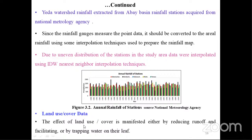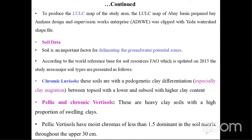Land use/land cover map data: the effect of land use/land cover is manifested by either reducing groundwater or facilitating water trapping at the surface. The land use/land cover map of the Amhara region, prepared by MRA Design and Supervision Work Enterprise, was clipped with the watershed boundary. Soil data is an important factor in delineating groundwater recharge zones. According to the FAO World Reference Base for soil resources updated in 2050, the major soil types of the study area include chromic luvisols — soils with pedogenetic differentiation, especially clay migration between topsoil and subsoil — and pellic and chromic vertisols, which are heavy clay soils with a high proportion of swelling clays.